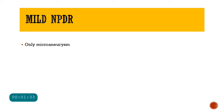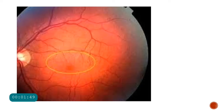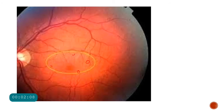In mild non-proliferative diabetic retinopathy, we will never have neovascularization. The only clinical finding is the presence of microaneurysms. In this fundus picture, the retina essentially looks normal; however, there are only small circular spots present, indicative of microaneurysms. If this patient has a history of diabetes mellitus, this is a case of mild NPDR.